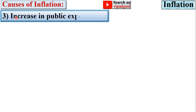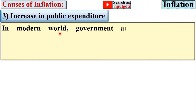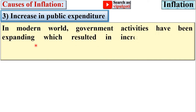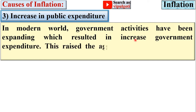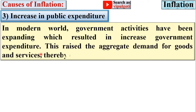Next: increase in public expenditure. In the modern world, government activities have been expanding, which results in increased government expenditure. This raises the aggregate demand for goods and services, thereby causing inflation.